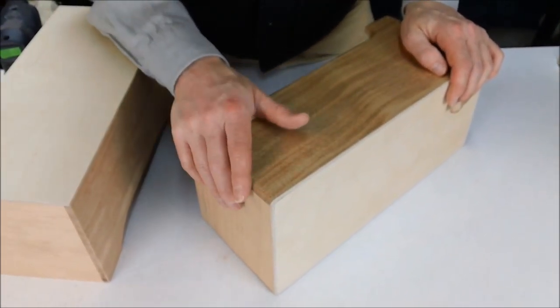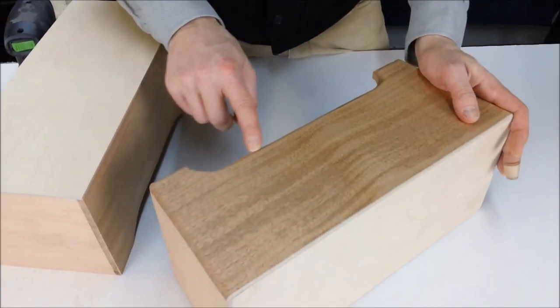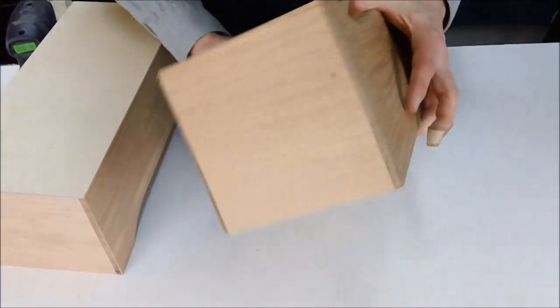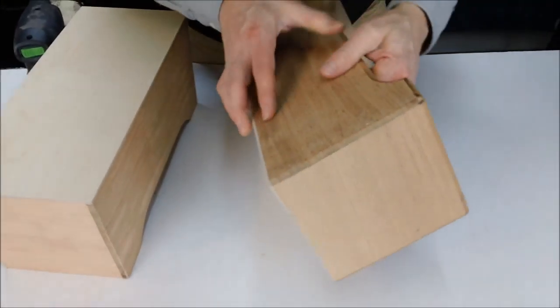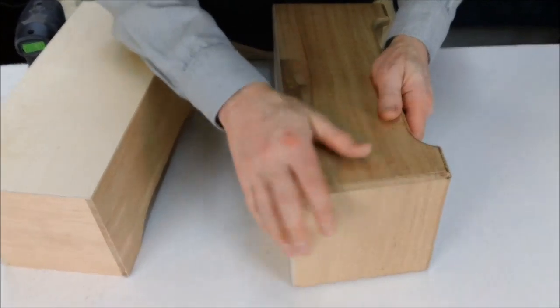Now we like to use a router to round things over here at the shop. So this is probably a quarter inch round over bit. We've gone over all the edges you can see here. And so what we would do now after we've got these all rounded over is hand sand them to smooth it out.